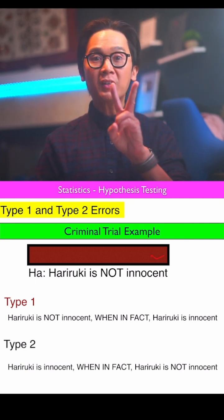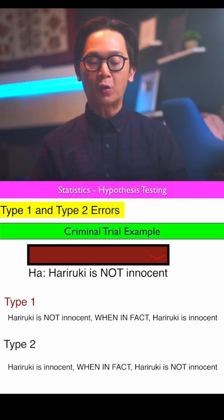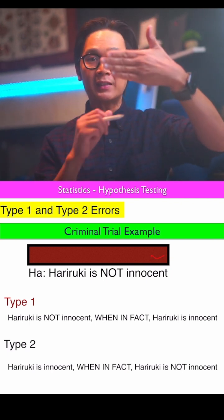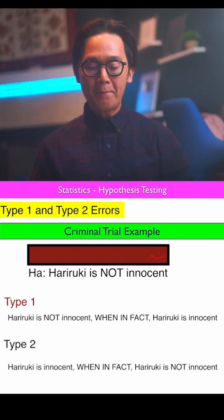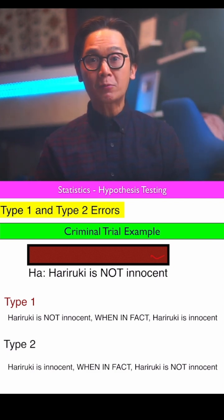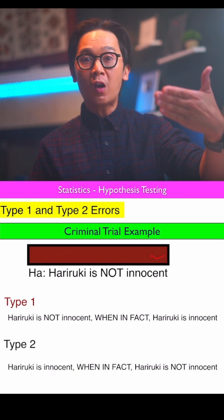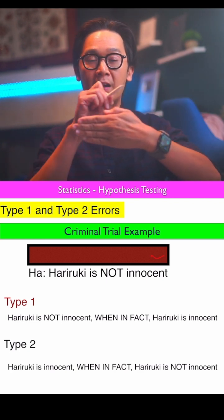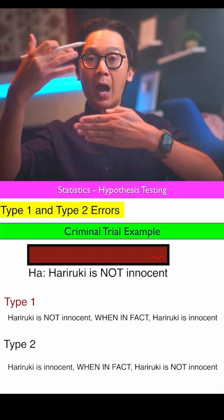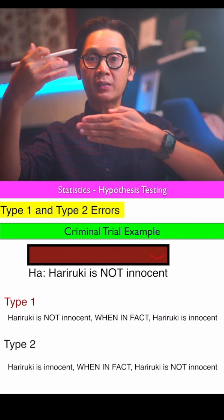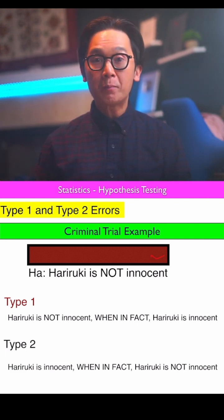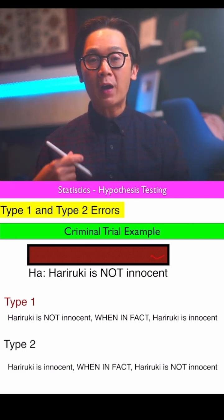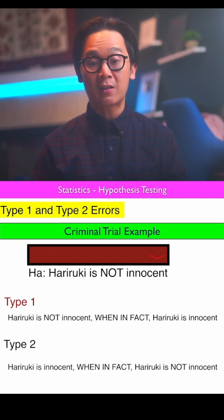The two things to remember: when writing the type 1 error, cover the null hypothesis and write the alternative hypothesis as your first statement. For the type 2 error, cover the alternative and write the null hypothesis as the top statement, then proceed to uncover the alternative hypothesis to complete both error statements.